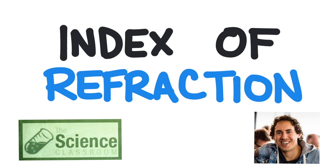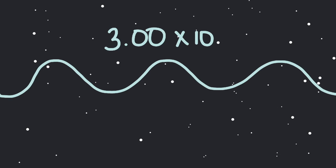In this video we're going to learn about index of refraction. Light travels at different speeds depending on the medium that it's traveling through. Light travels fastest through a vacuum at 3 times 10 to the 8 meters per second, and that's actually the speed limit of the universe. Nothing can travel faster than light in a vacuum.